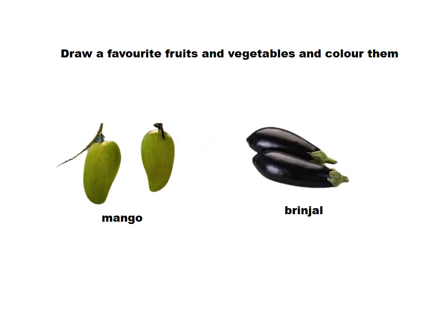Draw your favorite sour red fruit and vegetables and color them. My sour red fruit is mango and the vegetable is green, so I drew and colored them. You draw your sour red fruit and vegetables, color them, and enjoy good work.